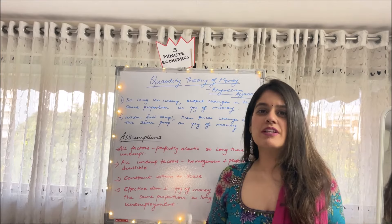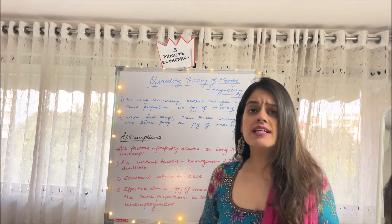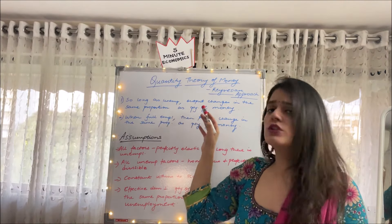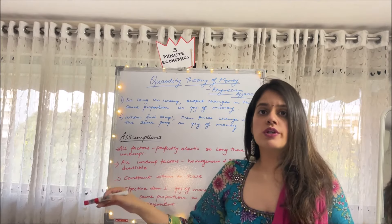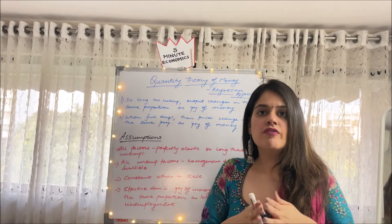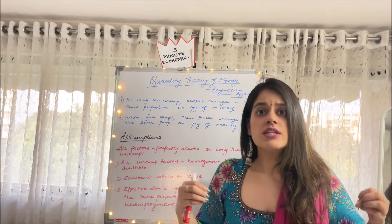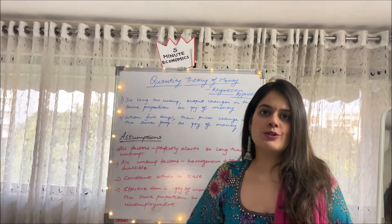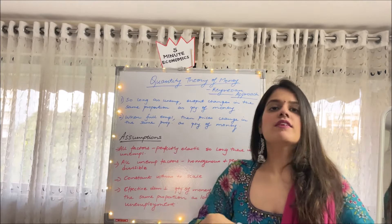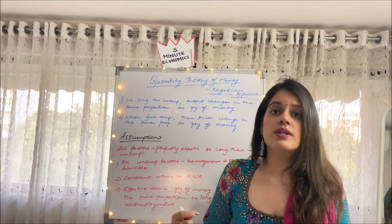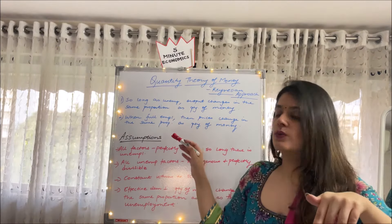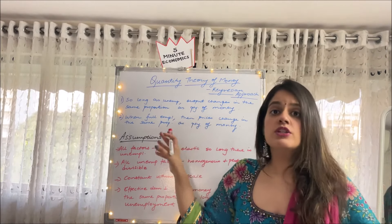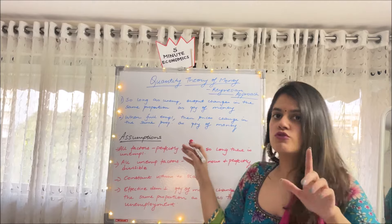Now let me introduce you to the very crux of the video. Two things have to be kept in mind throughout. Number one: so long as there is unemployment, the output changes in the same proportion as the quantity of money. So during the initial part, till the time resources are unemployed, we only talk about the change in output. Second point: when full employment is achieved and all resources are fully employed, then the price factor comes in — prices change in the same proportion as the quantity of money. Remember these two statements throughout the video.